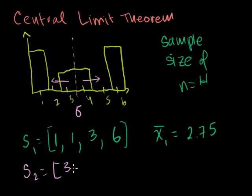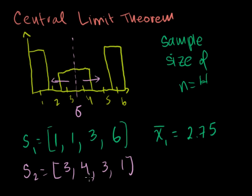My second sample of size 4 — let's say I get a 3, a 4, another 3, and a 1. I can't get a 2 or a 5 — it's impossible for this distribution, the chance is 0. So my second sample mean is 3+4+3+1 = 11, divided by 4, which is again 2.75.